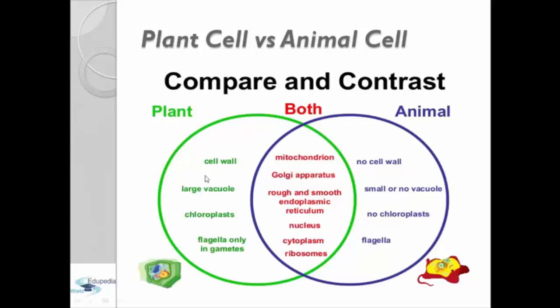The differences that we cannot see in each other: plants have cell wall, large vacuoles, chloroplasts, and also flagella only in gamete cells.